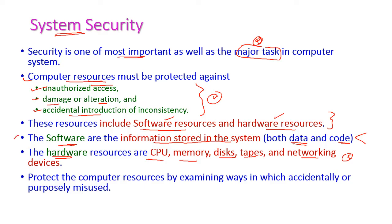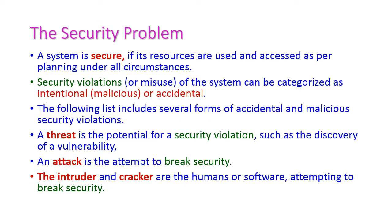We must protect both these types of resources. We protect computer resources by examining ways in which they are accidentally or purposely misused — unauthorized access, damages or alteration, or accidental introduction of inconsistency. This is called security. A system is secure if the resources are used and accessed as per planning under all circumstances.